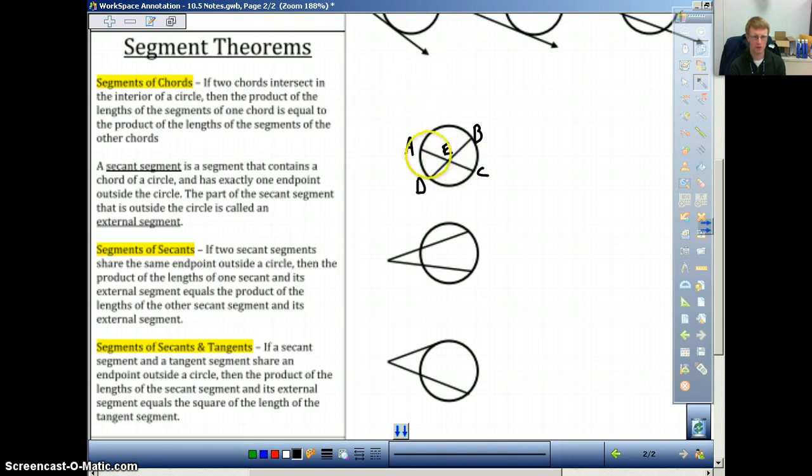All this is saying is that if you were to take each of these chords and break them into two segments, for example, if we take EA and EC, from the center. If we take the product of that, whatever the length of EA is times whatever the length of EC is, that will always be equal to the multiplication of the product of the other two. ED times EB. So this segment times this segment equals this segment times this segment. It's a really simple formula. Just got to be able to apply it.